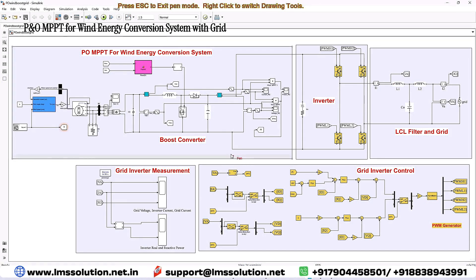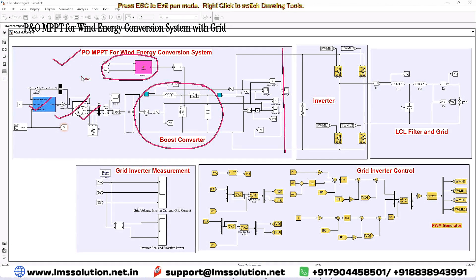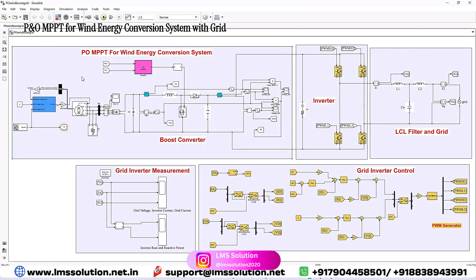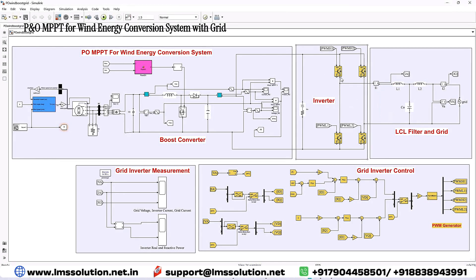This model consists of the wind energy conversion system, which includes a wind turbine and PMSG. Here we have a boost converter, controlled by MPPT, connected to the DC link. In the DC link, we have a single-phase inverter that will be connected to the grid via an LCL filter.